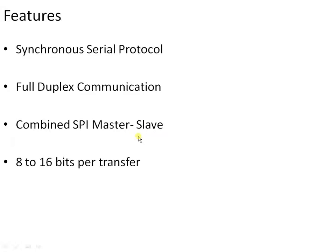SPI is a combined master-slave protocol, meaning a number of masters or slaves can be connected to a single SPI bus. However, the condition is that only one master can communicate with one slave at a time. A single character can be represented with 8 to 16 bits, but in most real-world applications we use 8-bit representation because ASCII representation, which is used everywhere, requires only 8 bits.